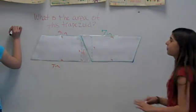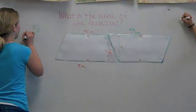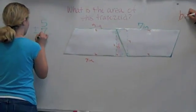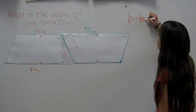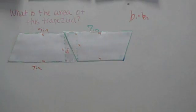Right. So, what would you do to find the base of this parallelogram? You add them together. Right. So, the beginning of the equation is base 1 plus base 2, which is 12. Right.